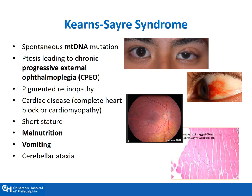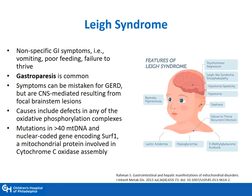Kearns-Sayre syndrome is secondary to spontaneous mitochondrial DNA mutation, presenting with ptosis and pigmented retinopathy. Regarding the GI symptoms, most patients present with a degree of malnutrition, short stature, as well as vomiting. Leigh syndrome presents with nonspecific GI symptoms, such as vomiting, poor feeding, and failure to thrive.